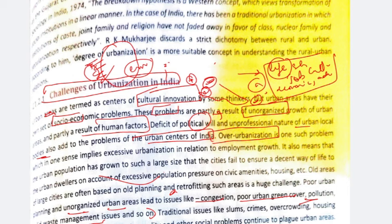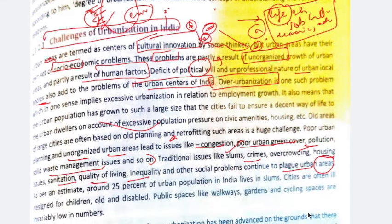In old areas built haphazardly, there is congestion, much more pollution, no green cover, and poor waste management. Those areas don't get good facilities — sanitation problems are much more, and epidemics can spread. Traditional issues like slums, crimes, overcrowding, housing issues, sanitation, quality of living, inequality, and other social problems continue to plague urban areas. As per estimates, around 25% of the urban population lives in slums. Cities are also ill-designed for children, the old, and the disabled. As urbanization increases, these problems are also increasing.